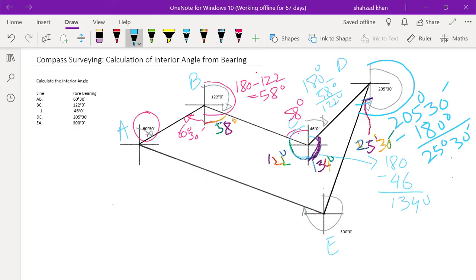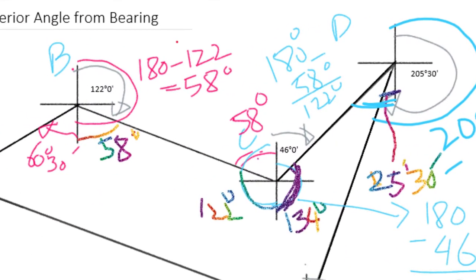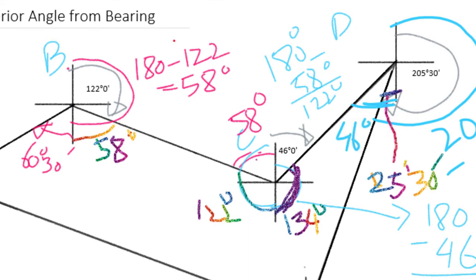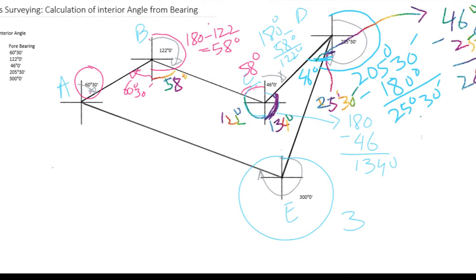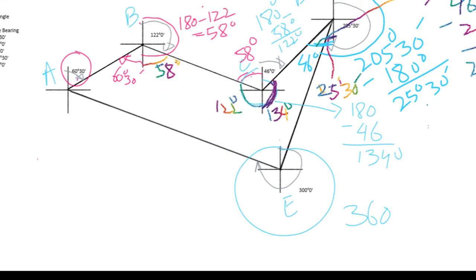We need to find the interior angle at D, where the vertical line at point C equals 46 degrees made with the vertical line at point D. Subtracting 25 degrees 30 minutes from 46 degrees gives the interior angle at D, which is 20 degrees 30 minutes. At point E, the fore bearing of EA is 300 degrees. We need to find the remaining angle to complete the circle at E, which is 60 degrees. This angle will equal 25 degrees 30 minutes by using the parallel line concept.